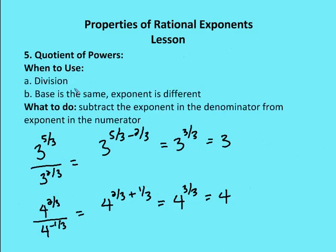Next property: quotient of powers. If I have the same base taken to some exponent divided by the same base taken to a given exponent, I subtract the exponents. So 3 to the 5 thirds over 3 to the 2 thirds equals 3 to the 5 thirds minus 2 thirds, which is 3 to the 3 thirds — the same as 3 to the 1, which equals 3. Second problem: 4 to the 2 thirds over 4 to the negative 1 third. Subtracting gives 2 thirds minus negative 1 third, which is 2 thirds plus 1 third, giving 4 to the 3 thirds, or 4 to the 1, which equals 4.